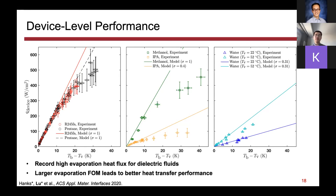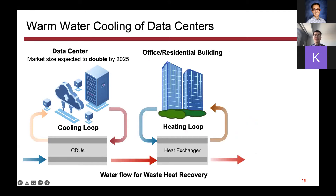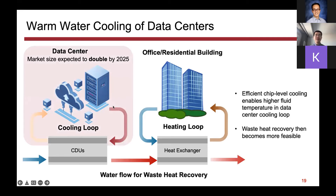I also want to comment on the direct impact of electronics cooling on sustainability. Now that we have more and more data centers containing a lot of computer chips — whether it's CPU, GPU, or even TPU — they have a lot of heat dissipation. People are working on warm-water cooling schemes for data center buildings, re-utilizing the heat dissipated by data centers in the heating loop of office and residential buildings. A more efficient electronics cooling technology enables a higher temperature in the cooling loop so that you can do waste heat recovery from a higher temperature source, promising more energy savings and higher efficiency.